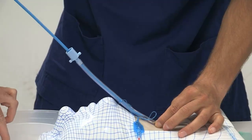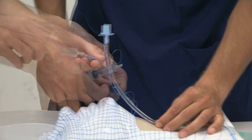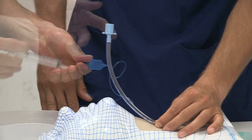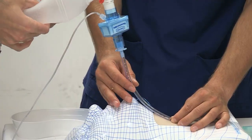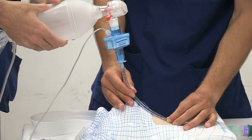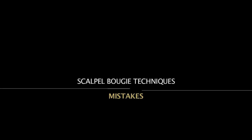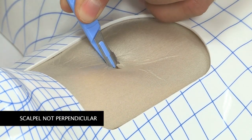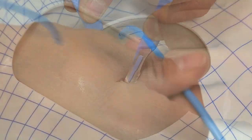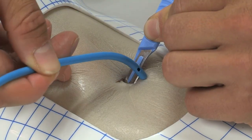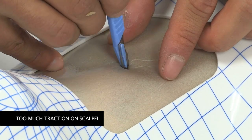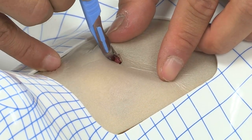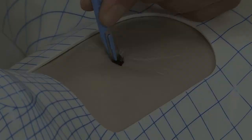Note that we no longer recommend jetting down a bougie. After the stab incision, holding the scalpel in a non-perpendicular fashion can obstruct the opening and make insertion of the bougie difficult or impossible. After the stab incision, too much traction on the scalpel will narrow the incision, possibly rotate the trachea, and can make insertion of the bougie more difficult.